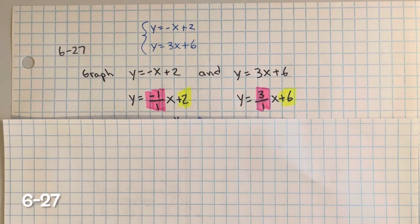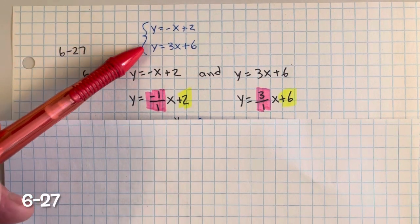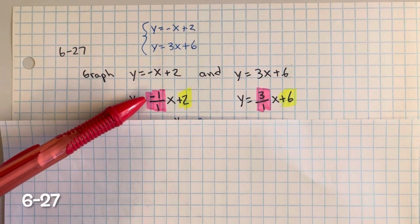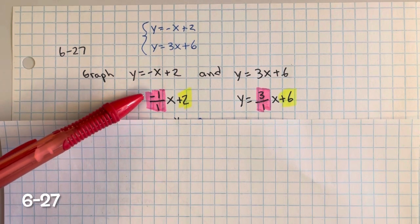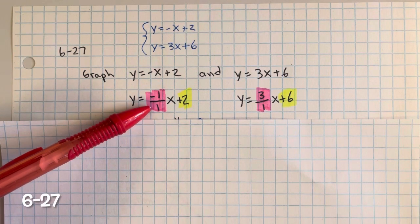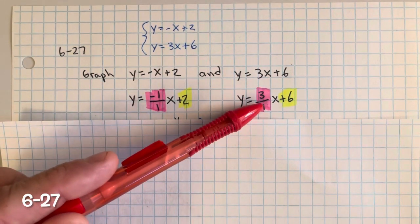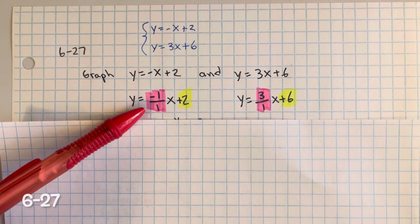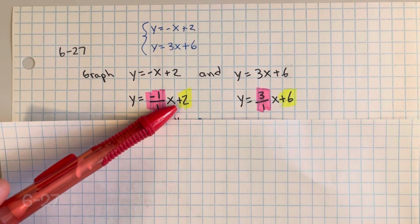Problem 627. On the same set of axes, graph each line in the system shown. What is the point of intersection, and does more than one exist? Here is our system — we need to graph these two equations. I wrote negative x as negative 1 over 1 times x because this puts it in slope form as rise over run, since negative 1 divided by 1 equals negative 1. I did the same thing for 3, writing it as 3 over 1. I have my y-intercept where the point lies on the y-axis.